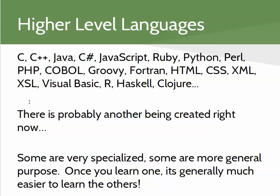Higher-level languages — there are many, many of them. C, C++, Java, C# are all very similar to each other. JavaScript is syntactically very similar to C++ but that's on the web. You've got scripting languages like Ruby, Python, Perl, PHP for the web, COBOL and Fortran for older technology like banking and engineering software, HTML, CSS, XML, XSL for web-related languages, and Visual Basic used a lot in spreadsheets and scientific calculations. I can't come close to naming all of them — in fact, there's probably another high-level language being created right now.